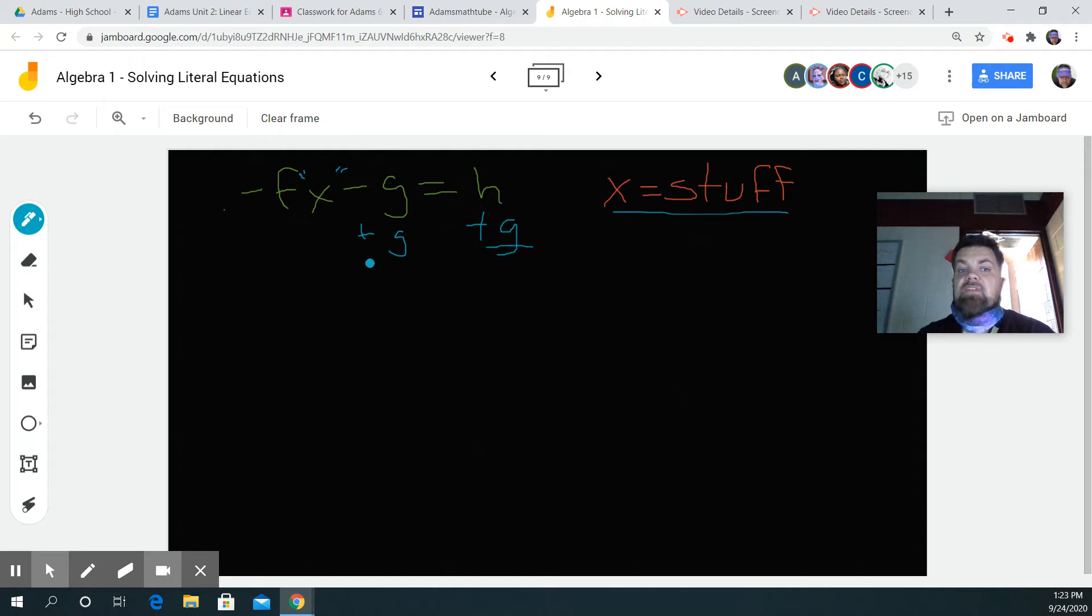Whatever I do on one side, I've got to do on the other. So then I get negative fx is equal to h plus g. That's it.